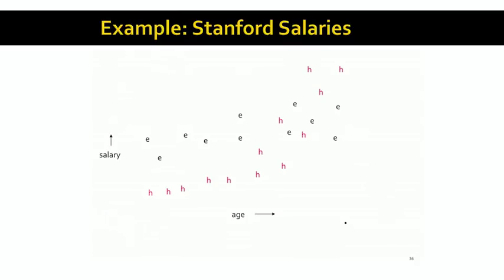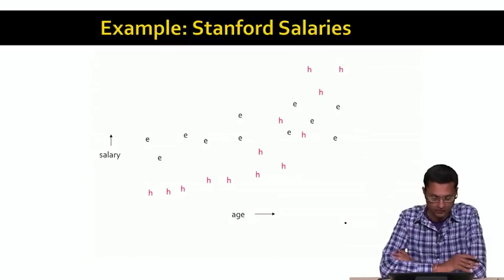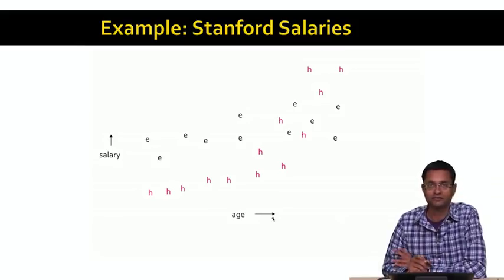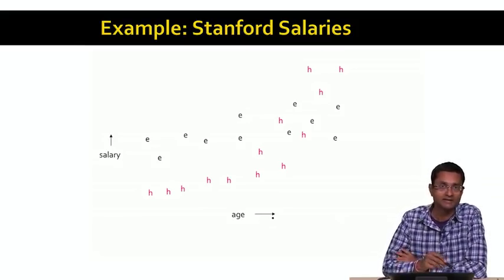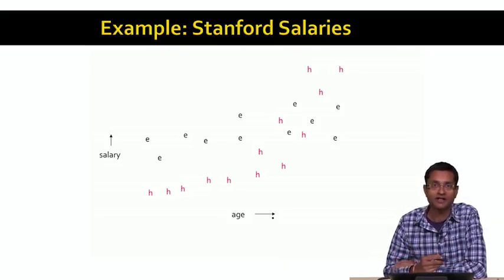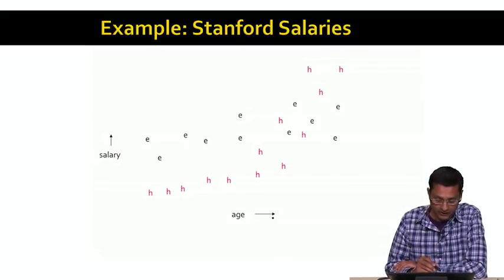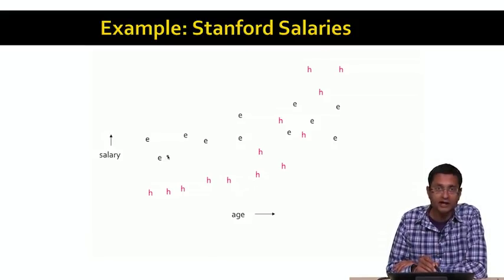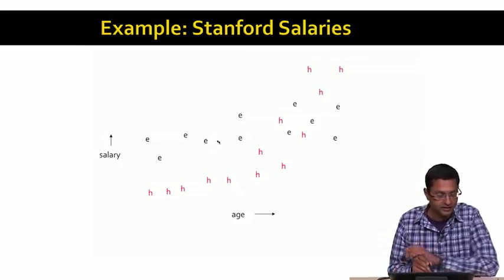Here's an example of a data set where the clusters don't look anything like ellipses or cigars. On the x-axis we have the age of faculty members at a university like Stanford, and on the y-axis we have their salaries. This is not the actual data, but a representation of what the data might look like, based on real-world experience. The data points marked by 'h' are salaries of faculty members in the humanities, whereas the data points marked with an 'e' are salaries of faculty members in the engineering department.